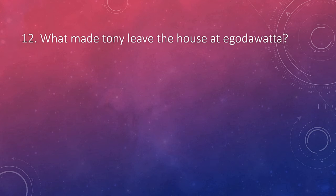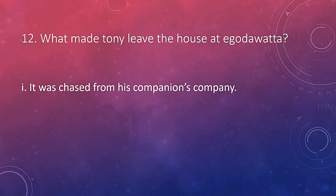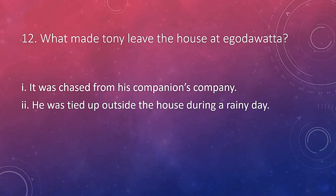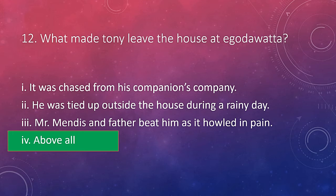What made Tony leave the house at Egodavate? There are several reasons: he was chased from his companion's company, he was tied up outside the house during a rainy day, and Mr. Mendez and father beat him as it howled in pain — above all. While Thyssa was ill and bedridden, Tony had to face numerous tortures. He was sent out of Thyssa's room and tied up in the verandah, which was unfamiliar treatment to him. He started mourning and howling throughout the night, creating a huge commotion in the household.